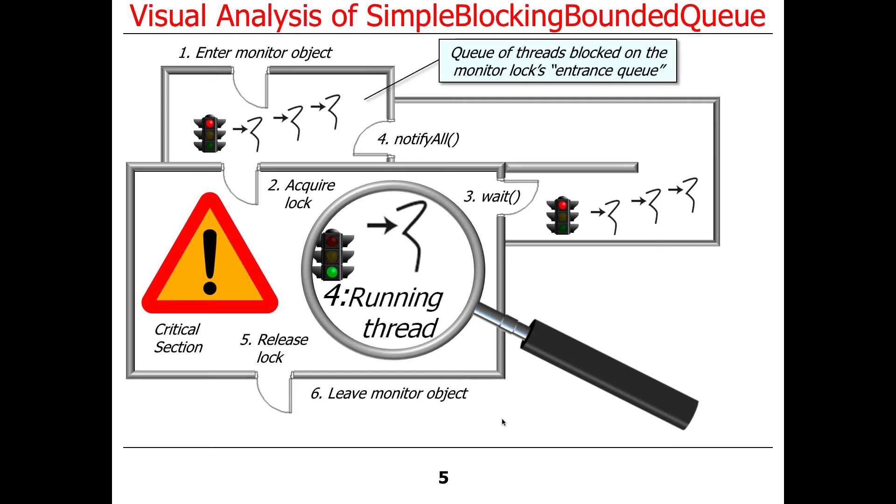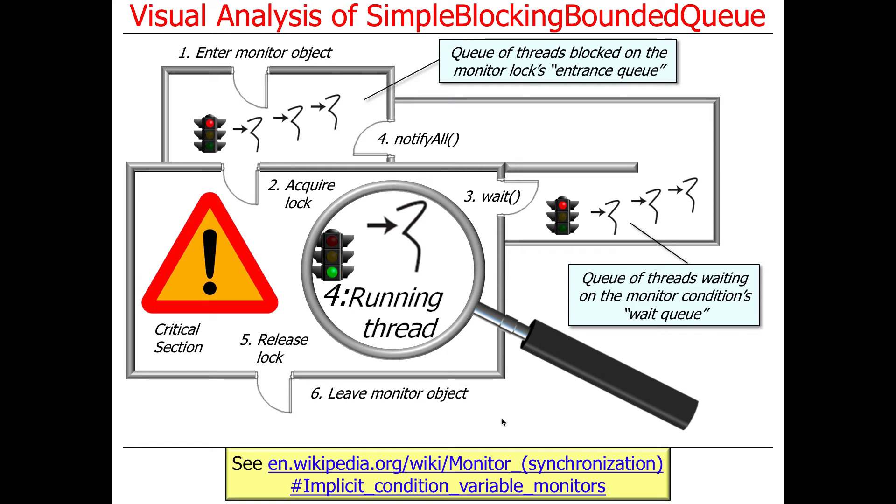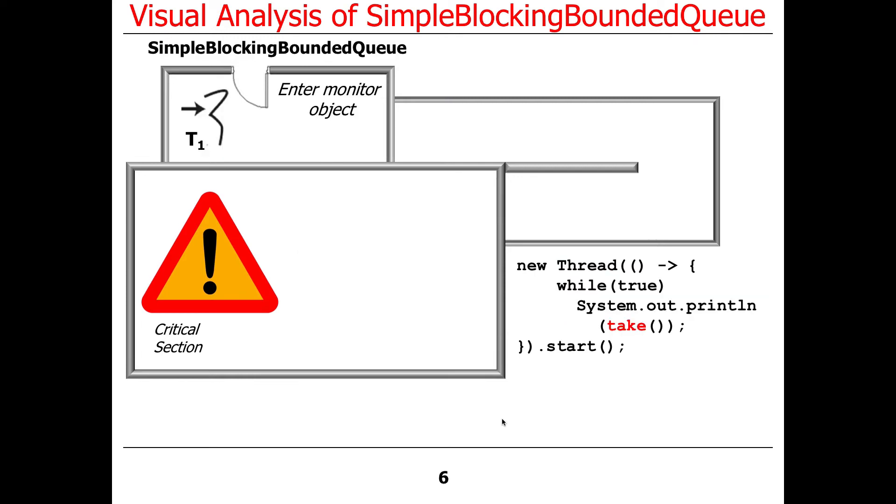We're going to zoom in and see what happens when we look at this. We have a queue of threads that are blocked on the entrance queue. Those are the things that are waiting to get access into the monitor object. And then we also have a queue of threads that are waiting on the wait queue. Java monitor objects implement what's called an implicit condition variable monitor. That's the type of monitor that they implement. You can read about it here at this Wikipedia link. So here's the simple blocking bounded queue.